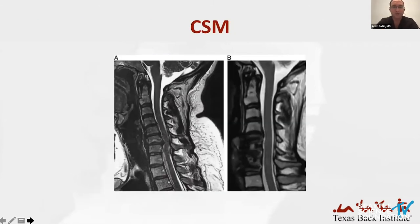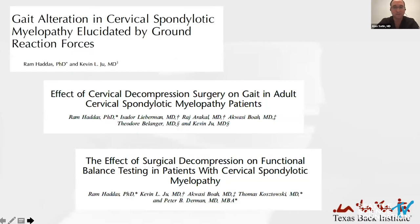An example of that is cervical spondylotic myelopathy. These patients typically exhibit a slow progressive stepwise decline in their function, and difficulties with gait and balance are common. Functional analysis in these patients allows us to expand our understanding by characterizing their spinal and lower extremity kinematics and spatiotemporal gait and balance dysfunction. This provides a surgeon with objective, irrefutable evidence for functional improvement that is not always captured radiographically.